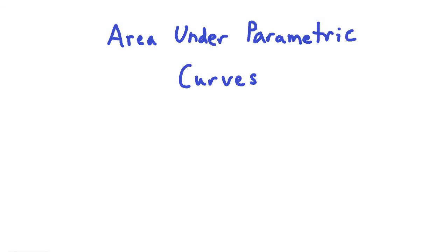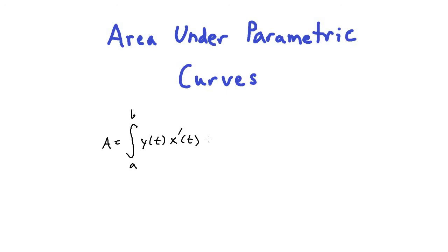Let's take a look at finding area under parametric curves. The formula for this is: the area is equal to the integral from a to b of y(t) — your y equation in terms of t — multiplied by x'(t), the derivative of the x equation in terms of t, dt. Remember, your a and b bounds are both in terms of t.